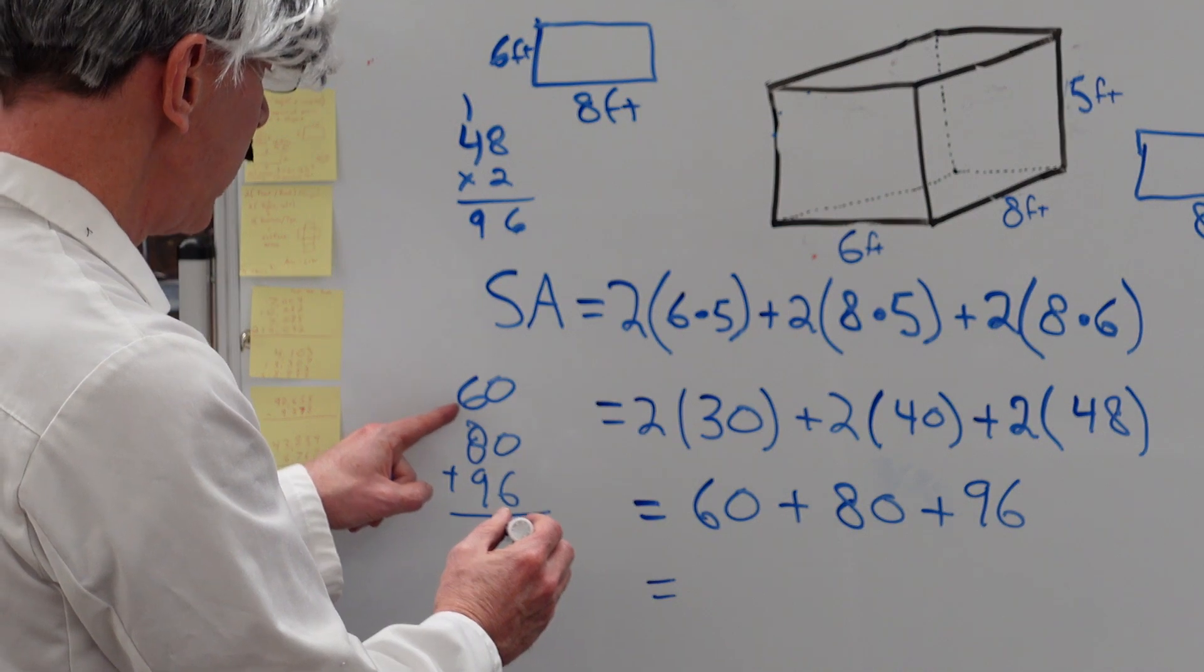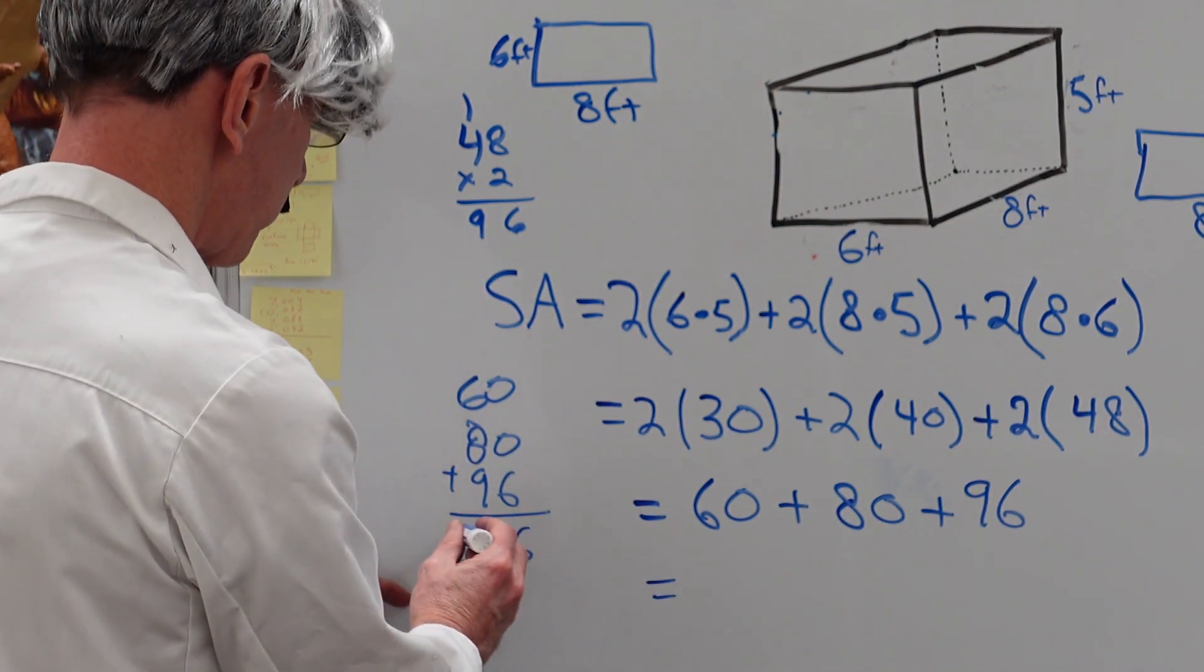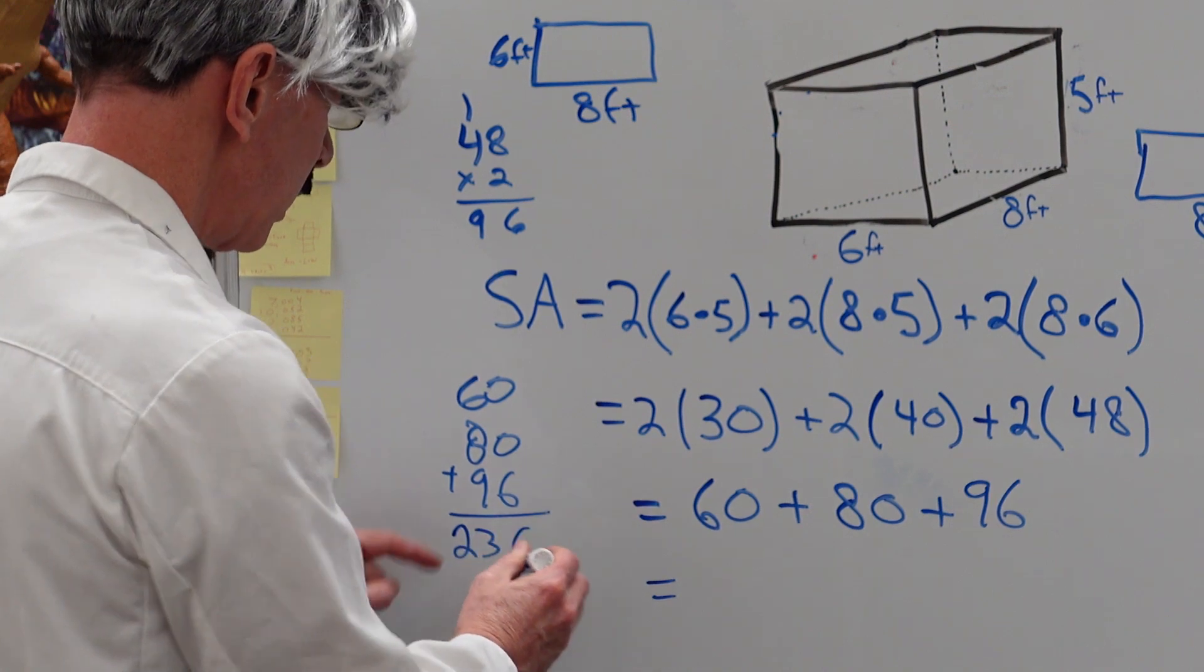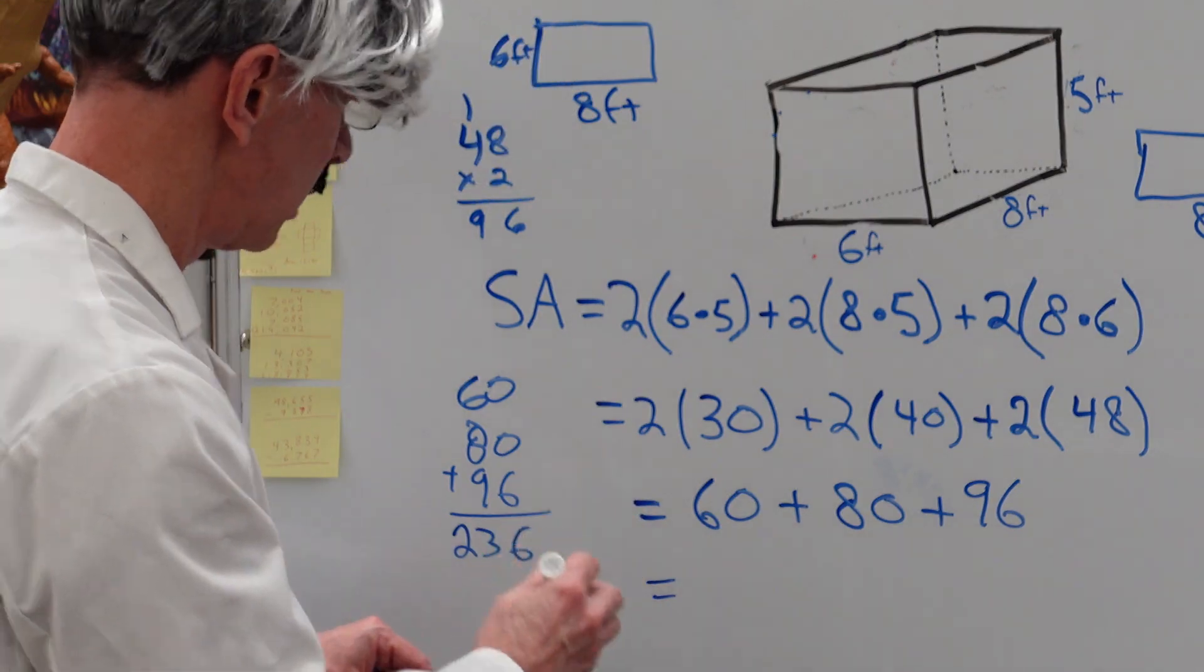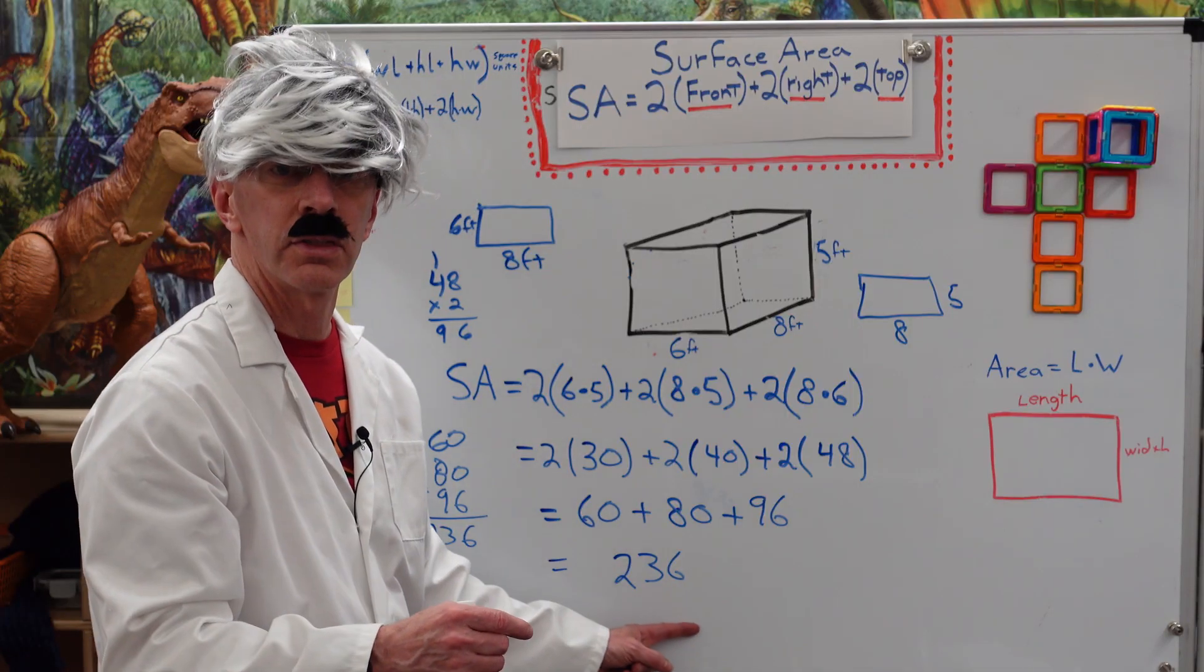17, 18, 19, 20, 21, 22, 23. Right here. This is very sloppy. It's very important to be very neat in mathematics. Very neat. And the answer is 236.